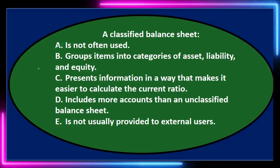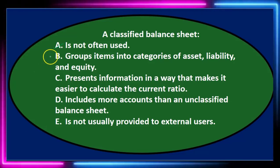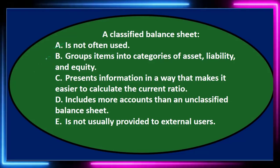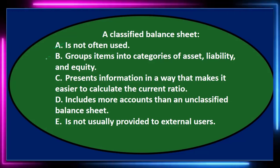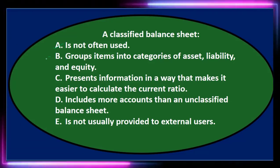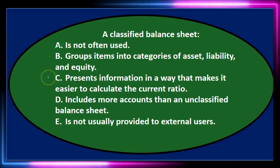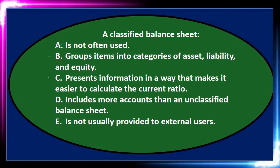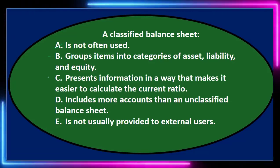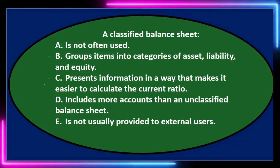B: groups items into categories of assets, liabilities, and equity. Now you might say that's kind of true because the balance sheet does have those groups — assets, liabilities, and equity. So that looks kind of good, but there are some subgroups too. I'm going to leave that one for now. C says: presents information in a way that makes it easier to calculate the current ratio. I'm going to leave that for now as well.